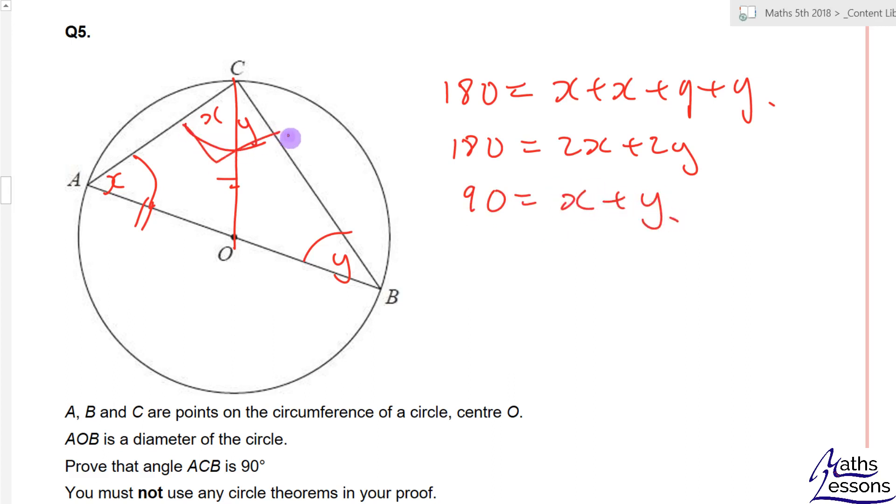This angle here is X plus Y. Therefore, ACB is equal to 90 degrees.